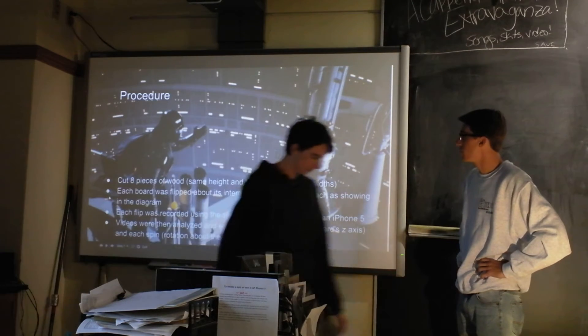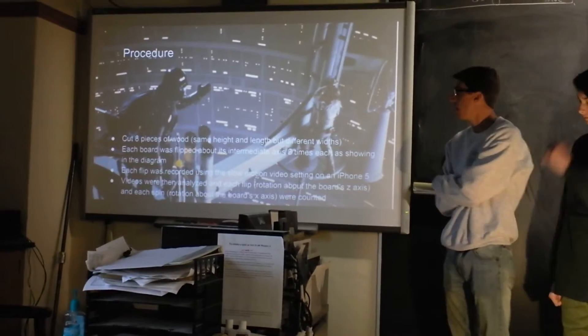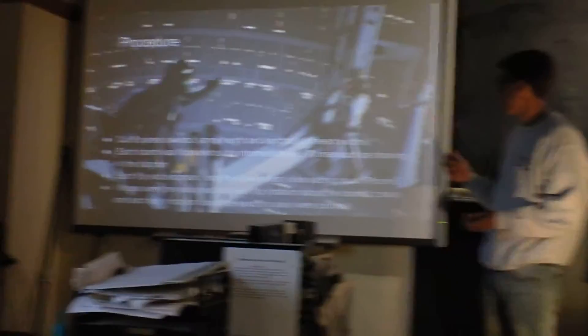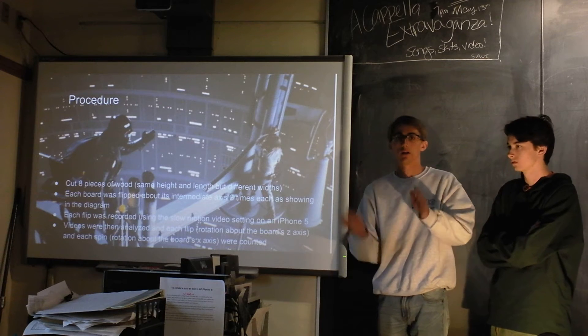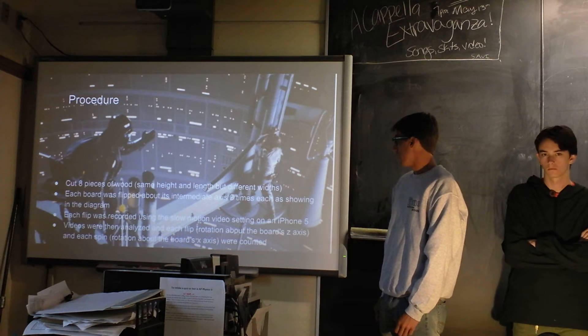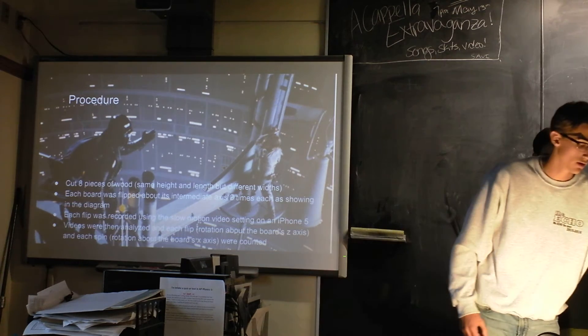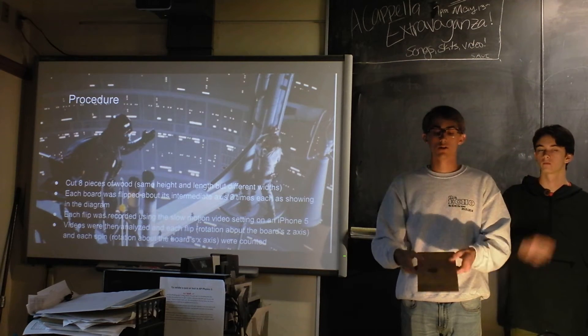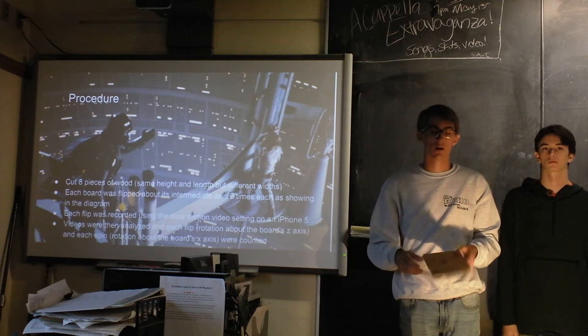And then, alright, so we cut eight pieces of wood of the same height and length with different widths. And we flipped each board about its intermediate axis three times. And then everything was recorded in slow motion so that we could analyze the flip and spin in slow motion, which makes it a lot easier. And we looked at the flip to spin ratio. It's kind of confusing, but we define this as a flip and this as a spin. So as it was going around the air, it was doing something like that. It's kind of hard to mimic.